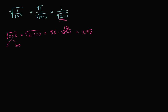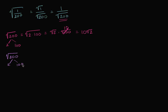But if it didn't jump out at you immediately that 100 is a large perfect square factor of 200, you could just start with small numbers. You could say the square root of 200 — well, it's divisible by two, so it's two times 100. And if 100 didn't jump out at you as a perfect square, you could say that's just two times 50.